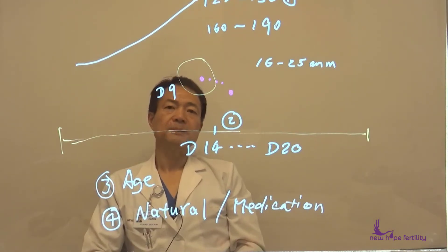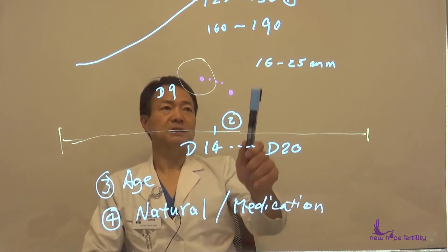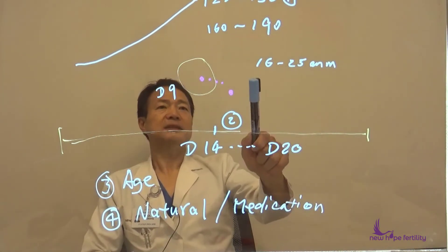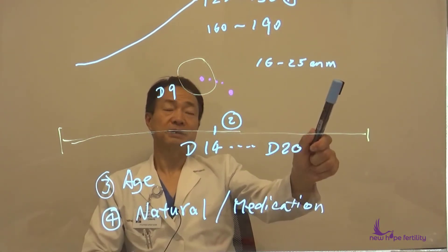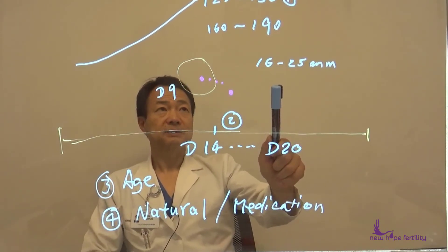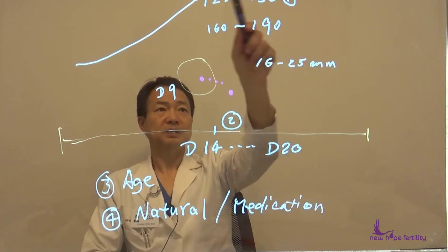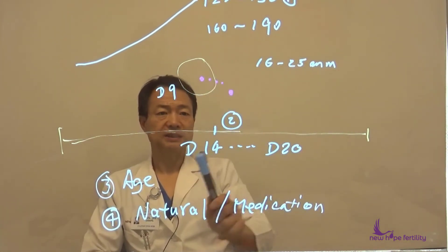So in conclusion, for the doctor—at least in our center—to determine what size is the right size to trigger the patient for egg retrieval is based on: size, yes, 16 to 25 millimeters. Number two—actually this is number one—what's the estrogen level? Number two: what's the size?